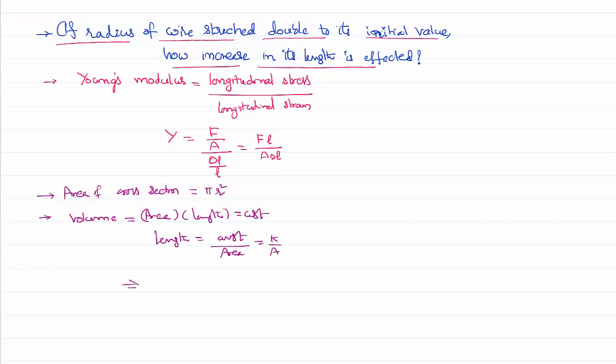So I can rewrite Young's modulus definition as force times length. But length is not known to us, I know only area. So I will write in place of L, k by A, by area of cross-section and delta L. Rearranging the terms: force times k.